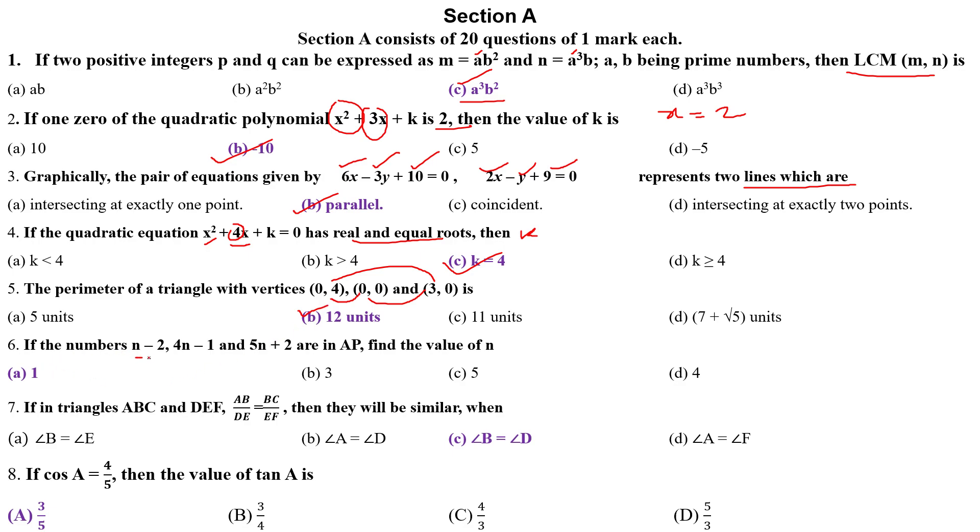Next question is, n minus 2, 4n minus 1, and 5n plus 2 are in AP. Find the value of n. This is the first term a1, this is the second term a2, then this is the third term a3. Apply the concept of common difference. a2 minus a1 equals a3 minus a2. Then solve the equation, then you will find out n equals 1.